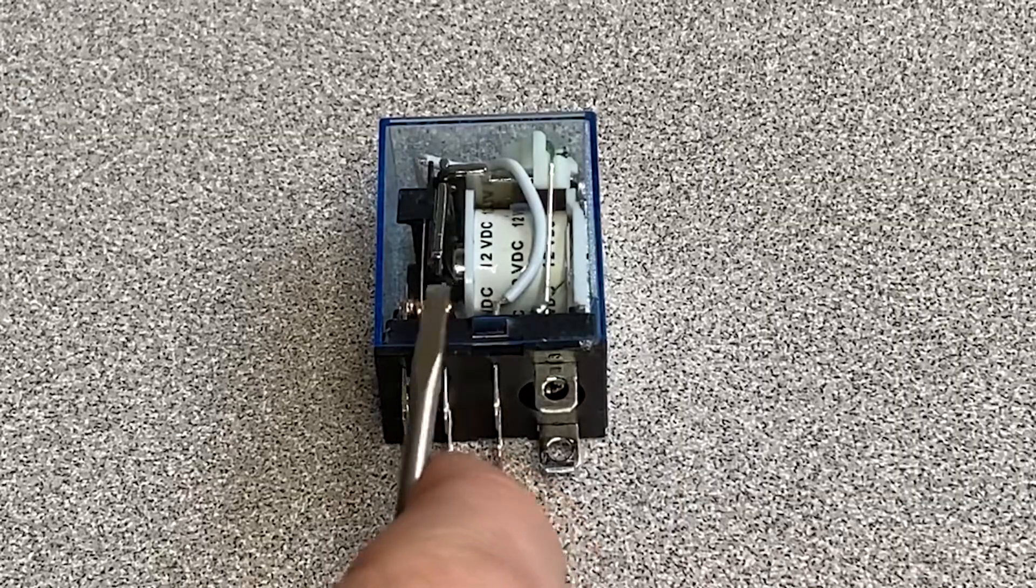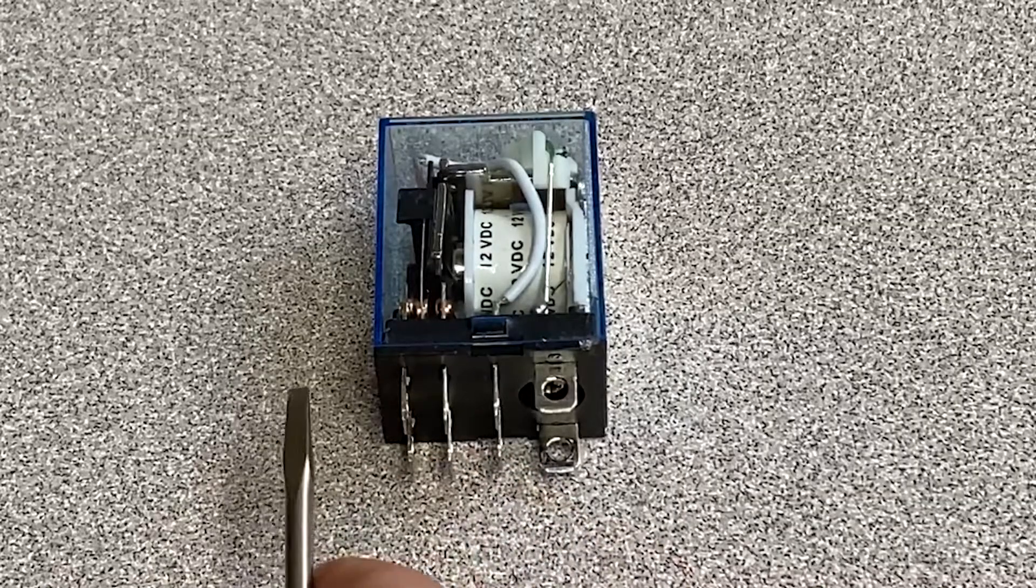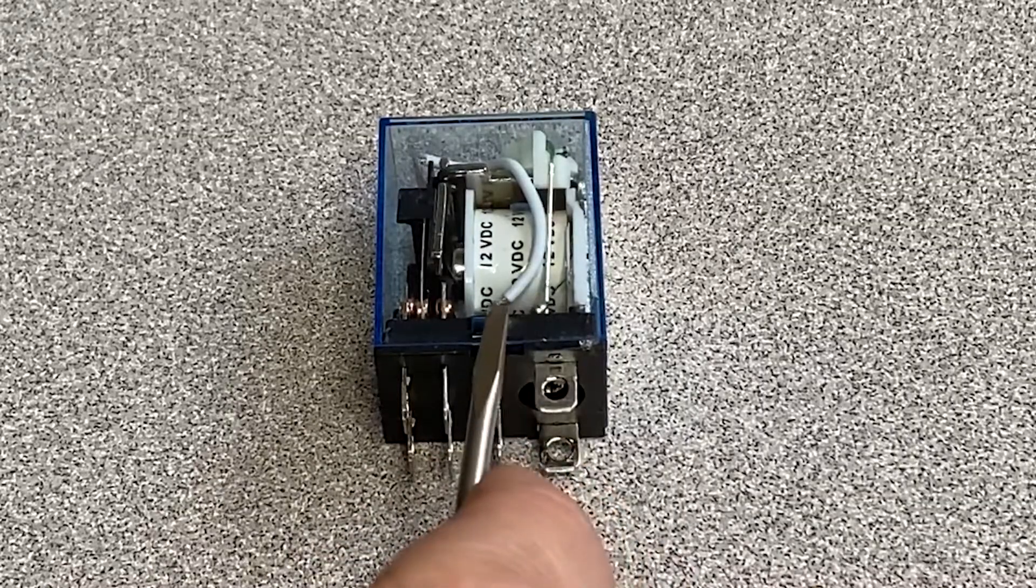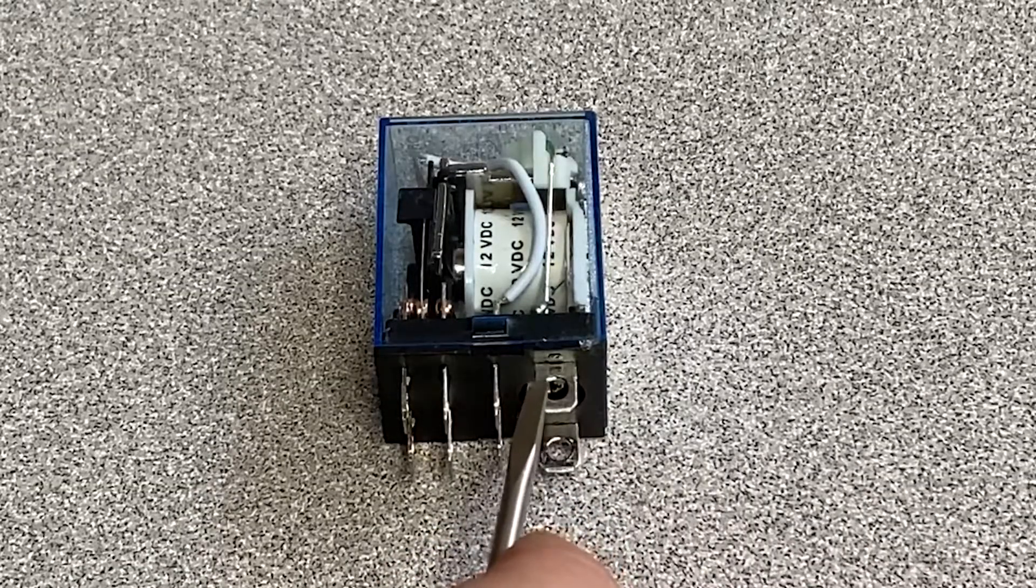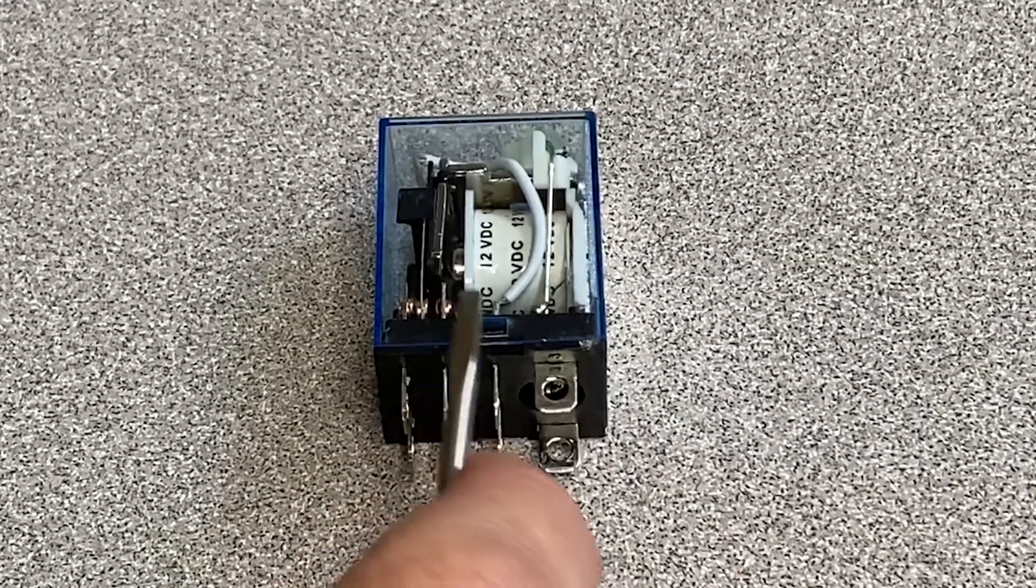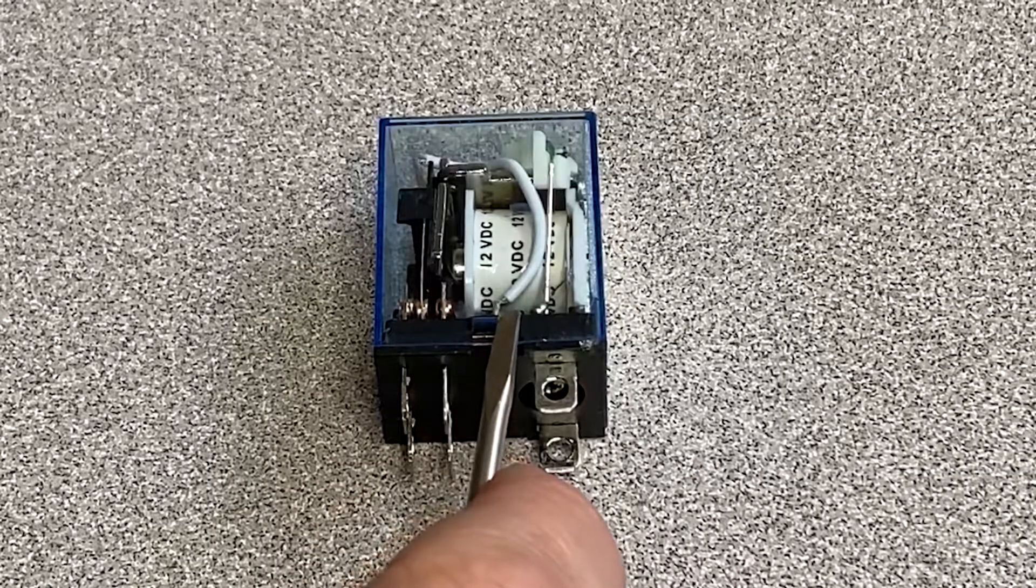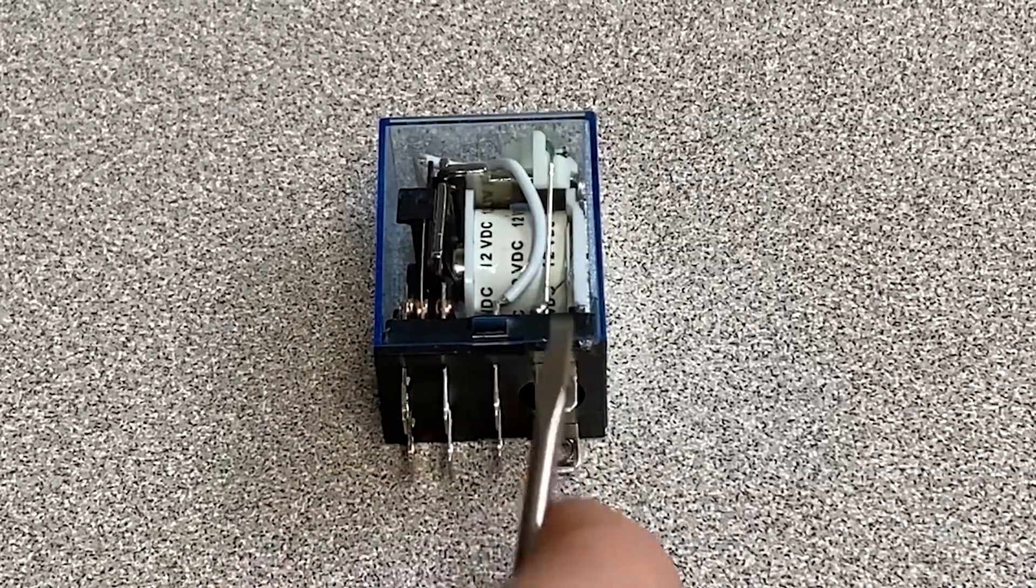The problem comes when you turn that relay off and now you no longer have electricity flowing through the coil, which means the magnetic field is going to collapse, the relay releases, which is what you want.